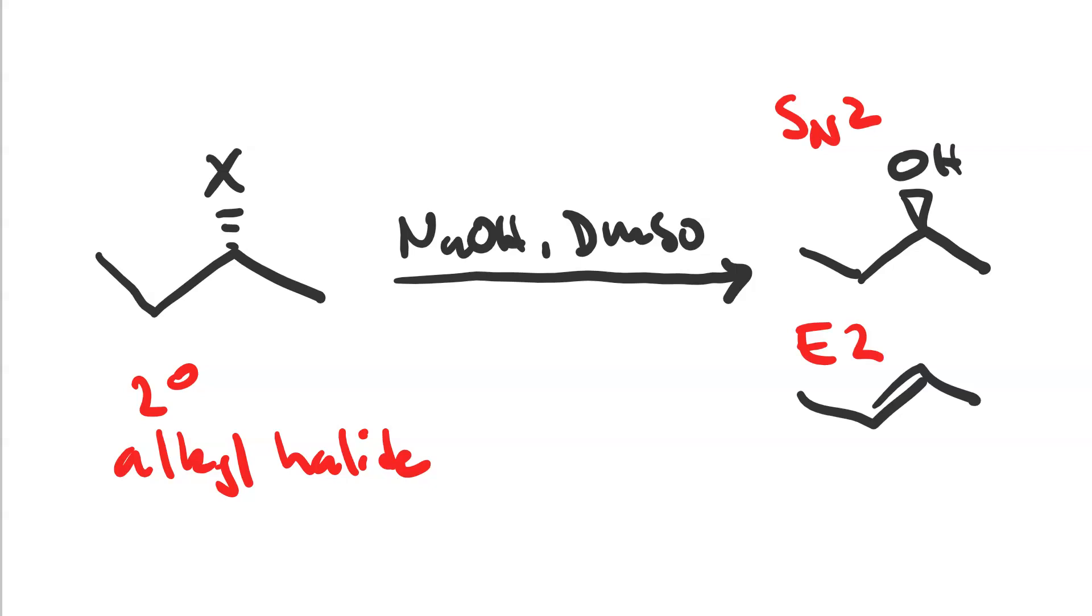So in this case, the alkene would be our major product over the alcohol, and elimination would rule over substitution. We'd still get some alcohol via substitution, it would just be a minor product. But if we get the E2 product, we can make an alcohol via an addition reaction, hydration.